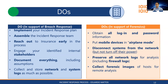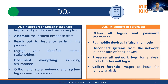Disconnect systems from the network — this is extremely important — but do NOT power them off. Especially with Cobalt Strike being so prevalent, malware pieces are running in memory only. The moment you turn the system off, all of that RAM evidence is gone. Just unplug from the network. In a virtual environment, turn off the NIC. Preserve all network logs including firewall logs. Collect forensic images of hosts for remote analysis.